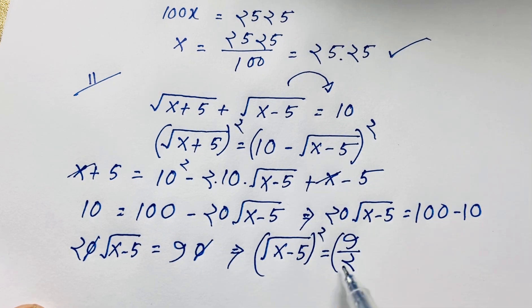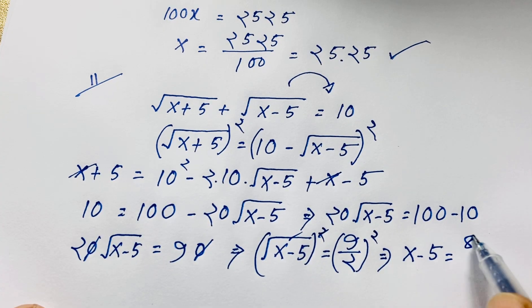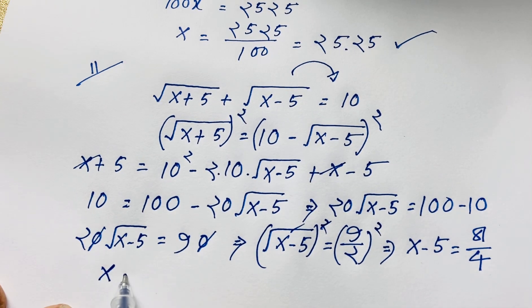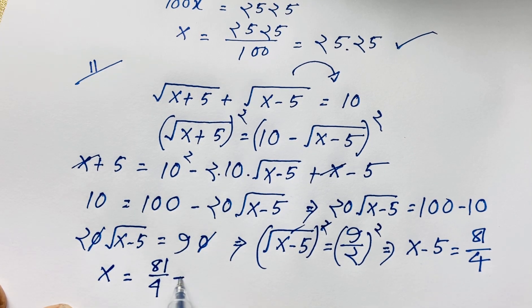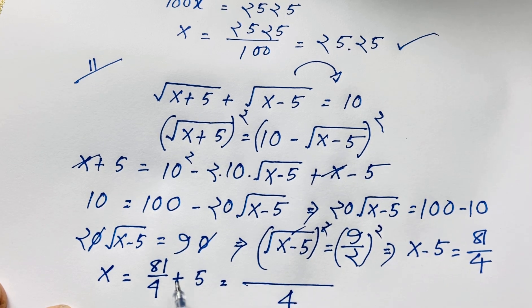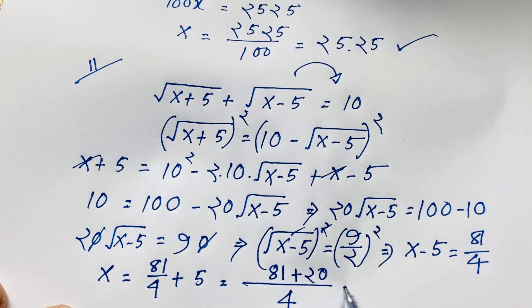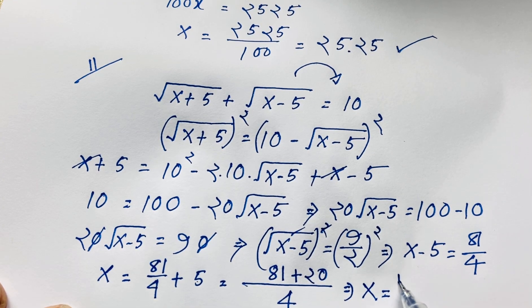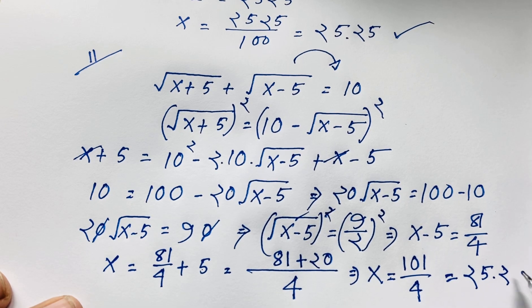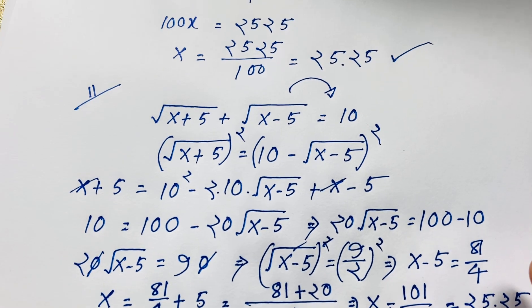If I use both sides whole square, the square root cancels and x minus 5 equals 81 over 4. So x equals 81 over 4 plus 5. Moving negative 5 to the other side gives positive 5. The least common denominator is 4, so 81 plus 20 gives 101 over 4. Therefore x equals 101 divided by 4, which is 25.25. So our final answer is x equals 25.25 for this radical maths Olympiad question.